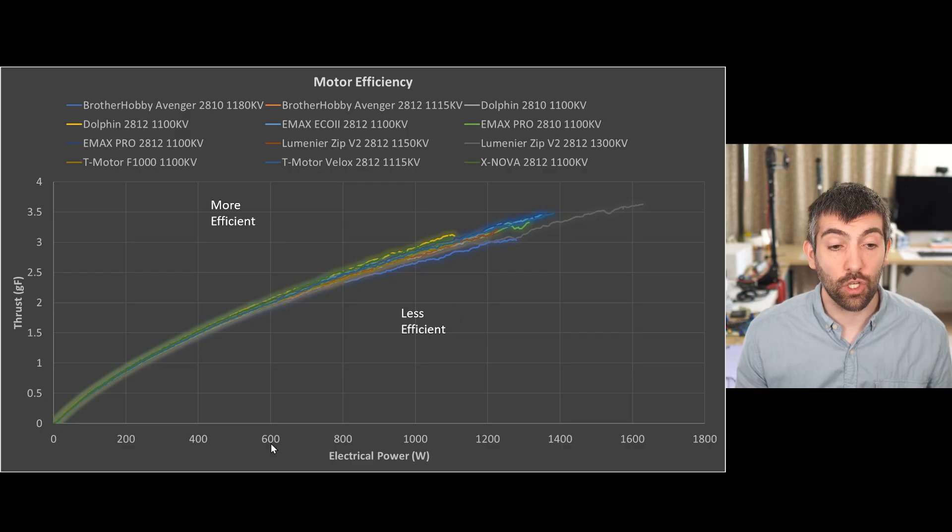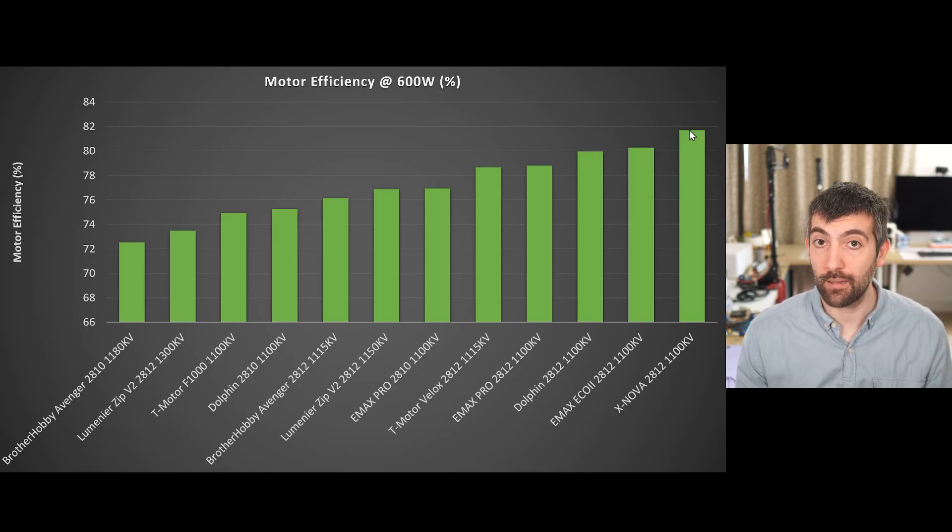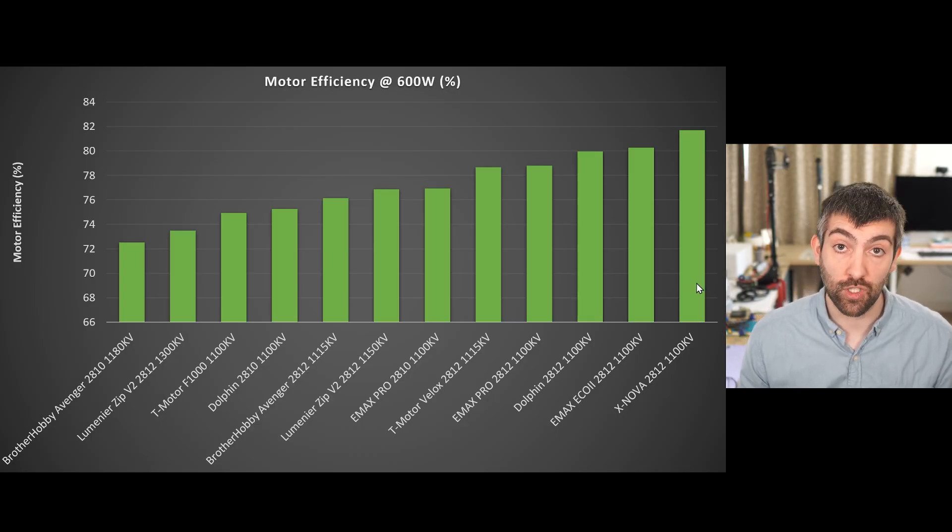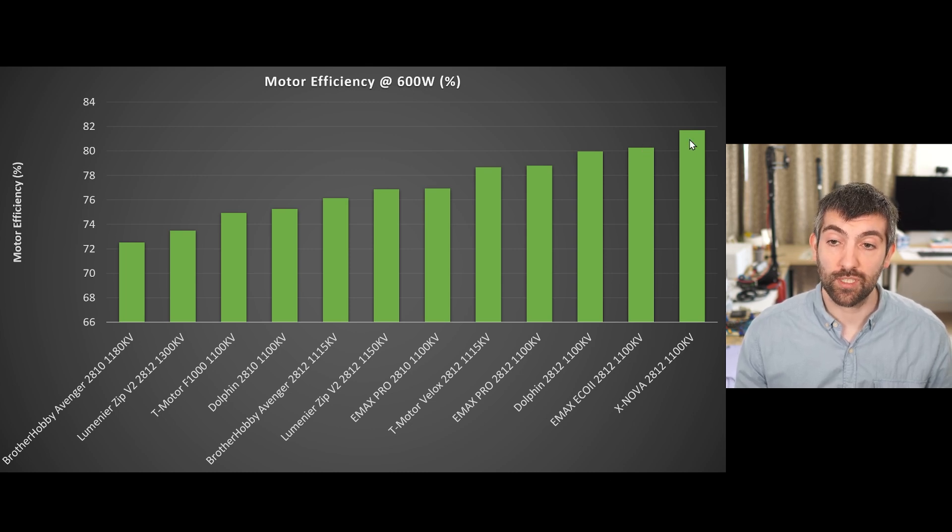An easy way to compare efficiency is to look at the efficiency of the motors at a particular power level. Let's take 600 watts for example, and you can see here that we get a big spread in motor efficiency from anywhere from about 72.5% all the way up to nearly 82%. As you see, the Xnova 2812 1100 kV is the standout winner here in terms of efficiency. That lower kV hurts it in terms of maximum thrust but helps it in terms of its efficiency, and so that's the trade-off that we see. The Emax Eco 2 is also doing really well in terms of efficiency, not quite to the Xnova's level, but the fact that it's getting over 80% efficiency while also being one of the most powerful motors that I measured is really impressive.